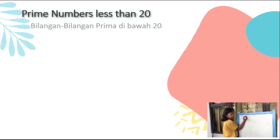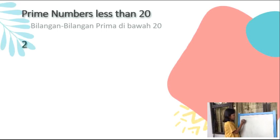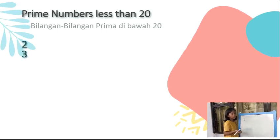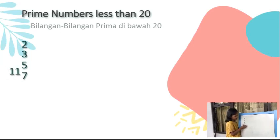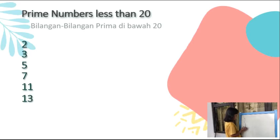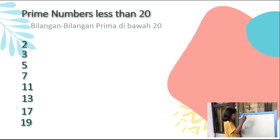Prime numbers less than 20 are: 2, 3, 5, 7, 11, 13, 17, and 19.